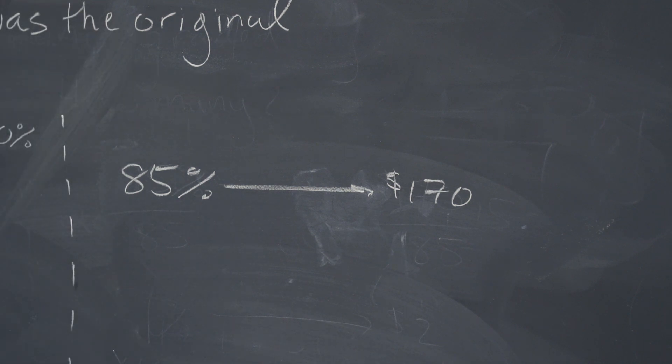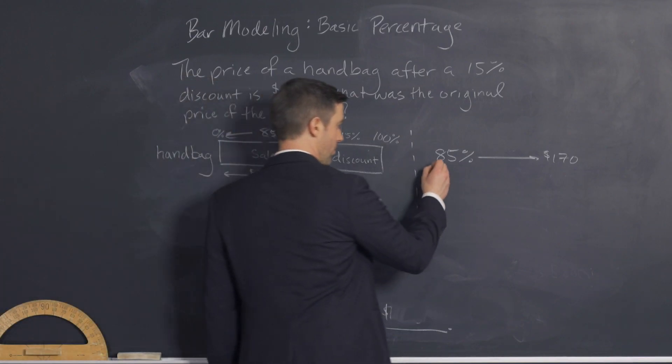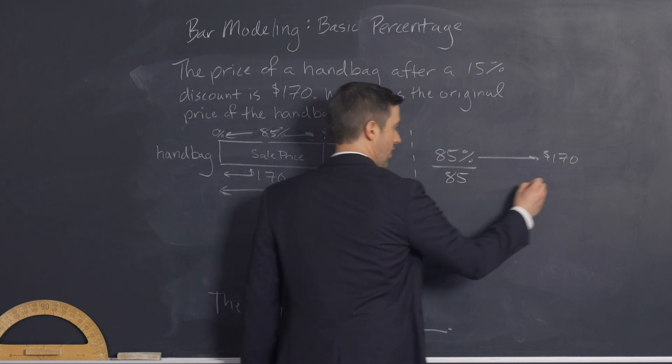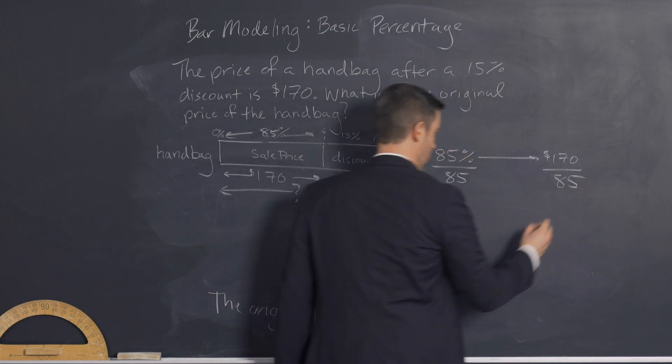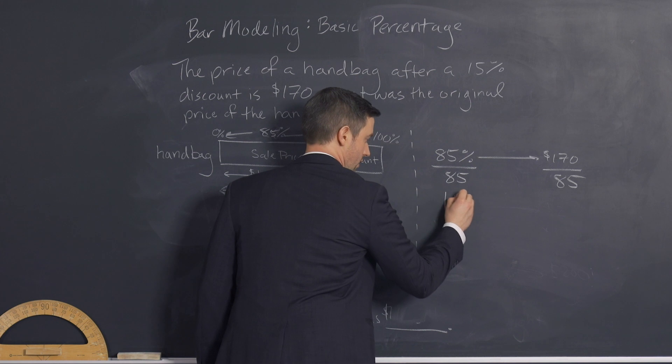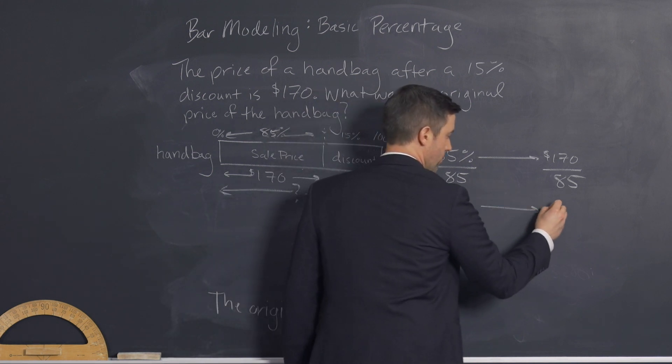I'm going to use the unitary method where we drop to one unit. So we would divide by 85 and so 1% would be equal to $2.